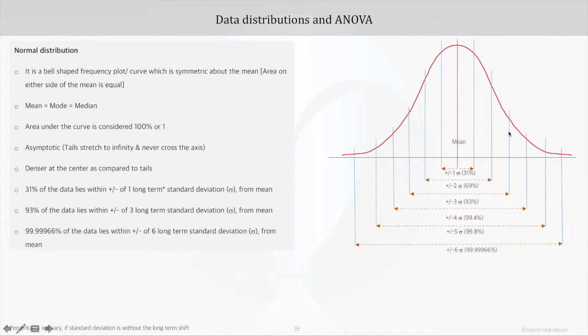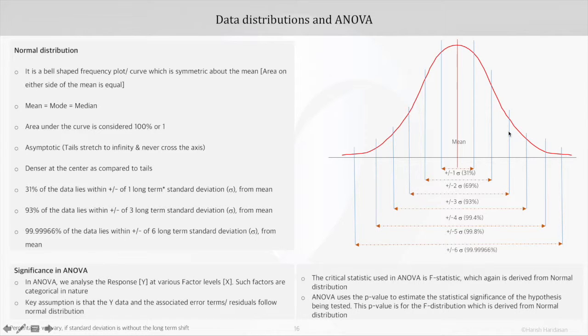This distribution, that is the normal distribution, is very widely used in variety of applications. Now coming to the significance in ANOVA, we analyze the response Y at various factor levels, that is X. In case of ANOVA here, the assumption is that the Y data and the associated error terms, or what we call residuals, follow normal distribution. The F-stat and the associated p-value, this F-distribution again is derived from normal distribution. So it's important to know the basic properties of normal distribution such that our interpretation job when we are getting into ANOVA becomes easy.